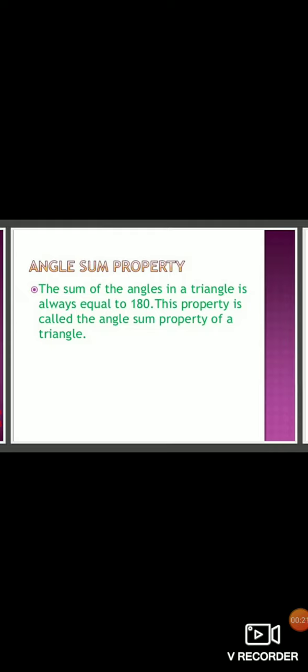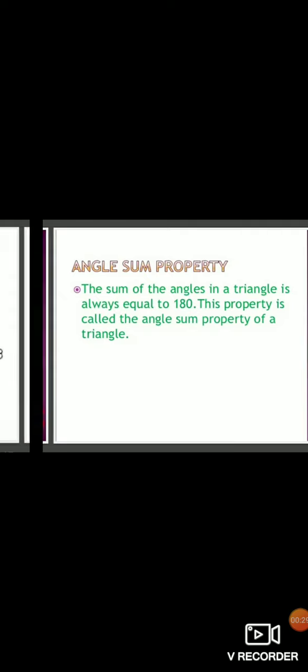...is always equal to 180 degrees. This property is called the angle sum property of a triangle. Here you can see angle A plus angle B plus angle C equals 180 degrees.